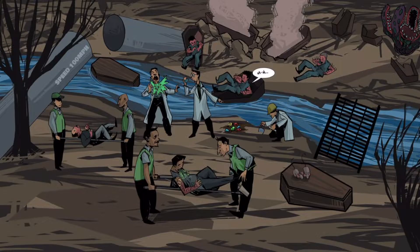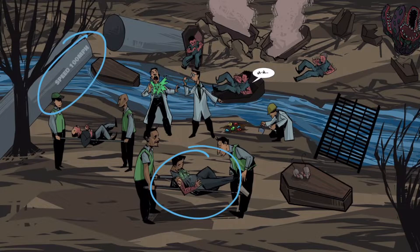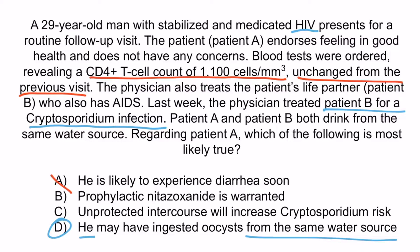Recall the people in the stretchers indicate AIDS patients, and the speed of water through the pipes — indicated by the sign reading '100 miles per hour' — helps you remember that cryptosporidium infections only occur when CD4 counts drop below 100. Choice A is wrong because this implies patient A will develop a cryptosporidium infection, which we do not expect. Choice B is wrong because cryptosporidium treatment is not given without high suspicion of an active infection; although if you were to treat the infection, nitazoxanide is a good idea. Choice C is wrong because cryptosporidium is not transmitted sexually — it's transmitted through water contaminated with cryptosporidium oocysts. And that should be all you need to know about cryptosporidium.